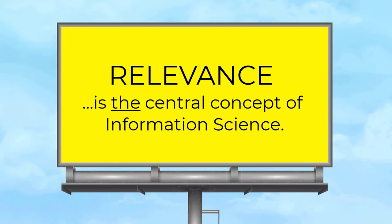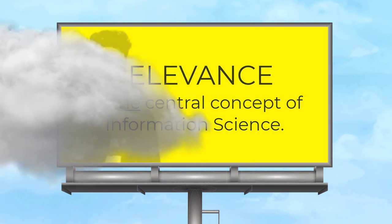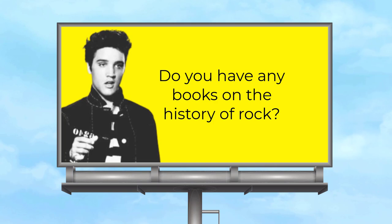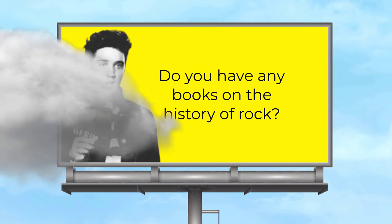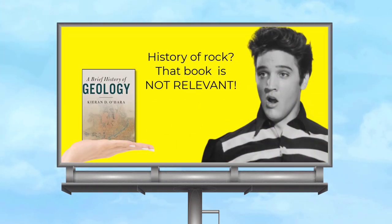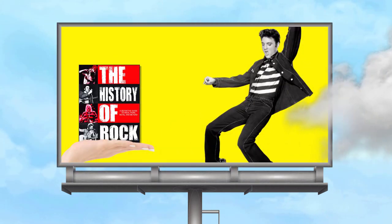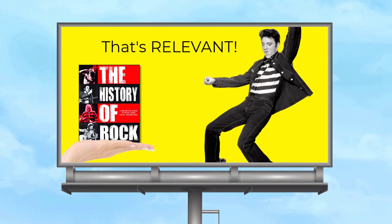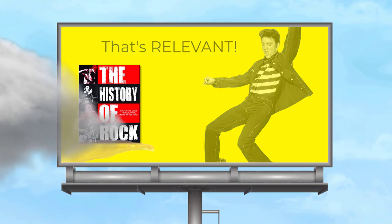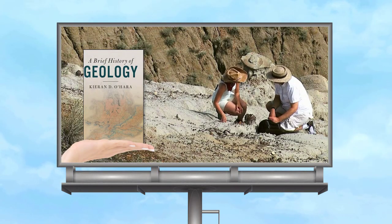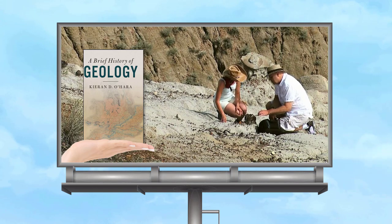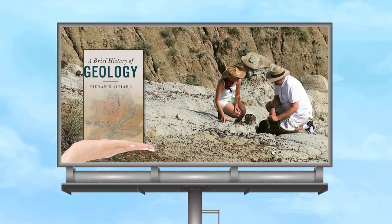It has been written that relevance is the central concept of information science. For when a person asks a question of a librarian or an information system, we want the response or answer to be relevant. Relevance is the property of a text being potentially helpful to a user in the resolution of a need. In its simplest sense, relevance is reduced to the topicality of a document. Though traditionally seen as an individual judgment, relevance or irrelevance is to some degree socially constructed within different communities.